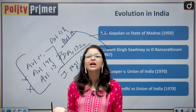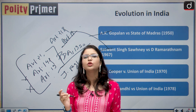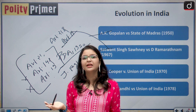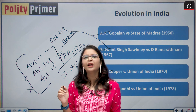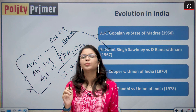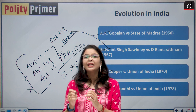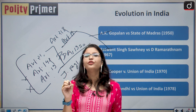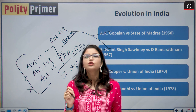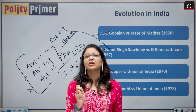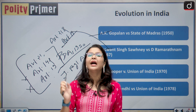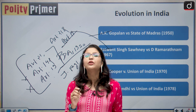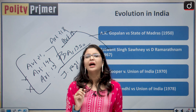After Maneka Gandhi, Article 21 started being interpreted in very broad terms and most of our rights are included under its wide interpretation. Article 14 not only grants equality — it also strikes at the heart of arbitrariness. No law can be arbitrary, unreasonable, or oppressive; if it is so, it will be declared null and void by the Supreme Court.